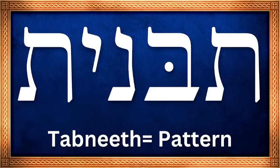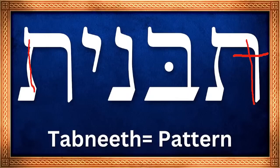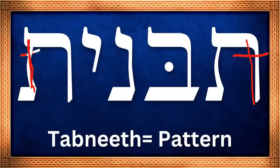Now, how many of you remember what the original pictograph of this letter tav is? You can see it here. The original pictograph of that letter tav was a picture of a cross. Isn't that amazing? You see it in the Old Testament blending in with the New Testament. So contained within this word for pattern is the finished work of the cross — it begins and ends with the finished work of the cross. Everything connects.